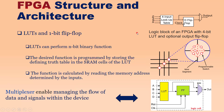For example, if you want to implement a BCD-to-Gray code converter — say, 10-bit — you can use a 10-input lookup table where n equals 10. The desired function is programmed by storing the truth table of that function into the SRAM cells of the LUT. The function is then calculated by reading the memory address determined by the inputs.